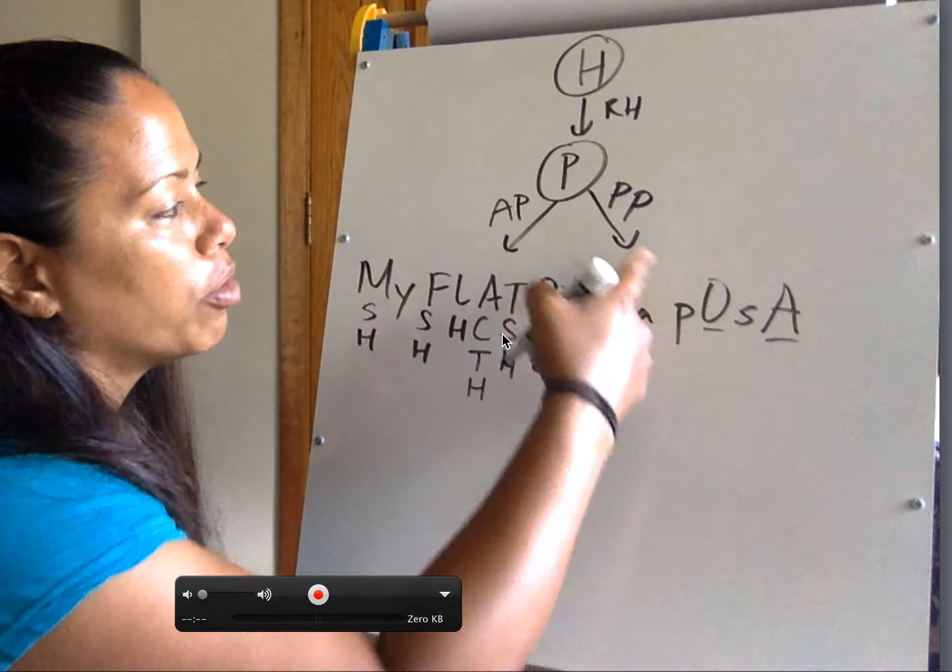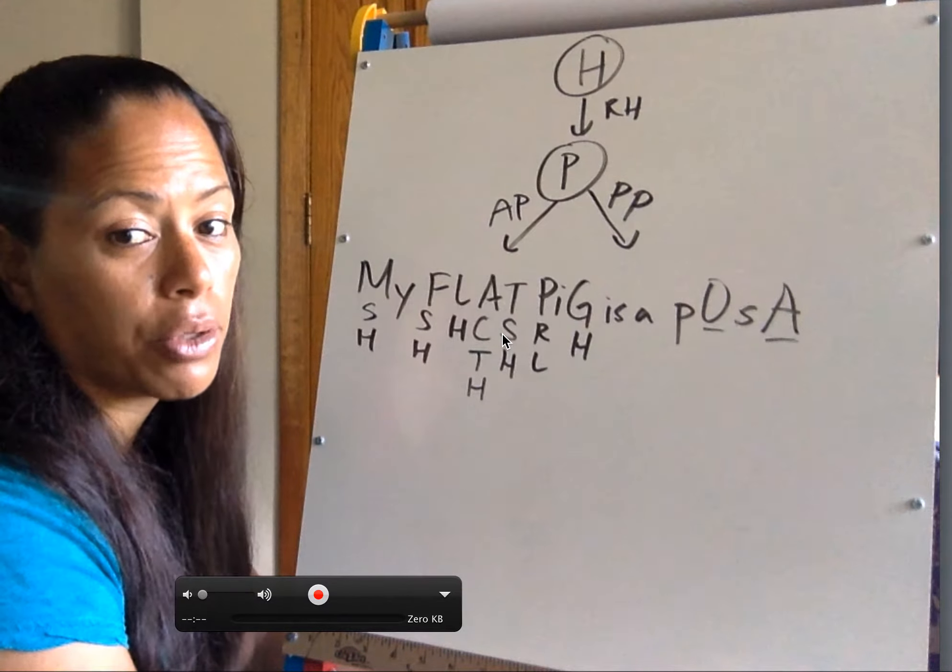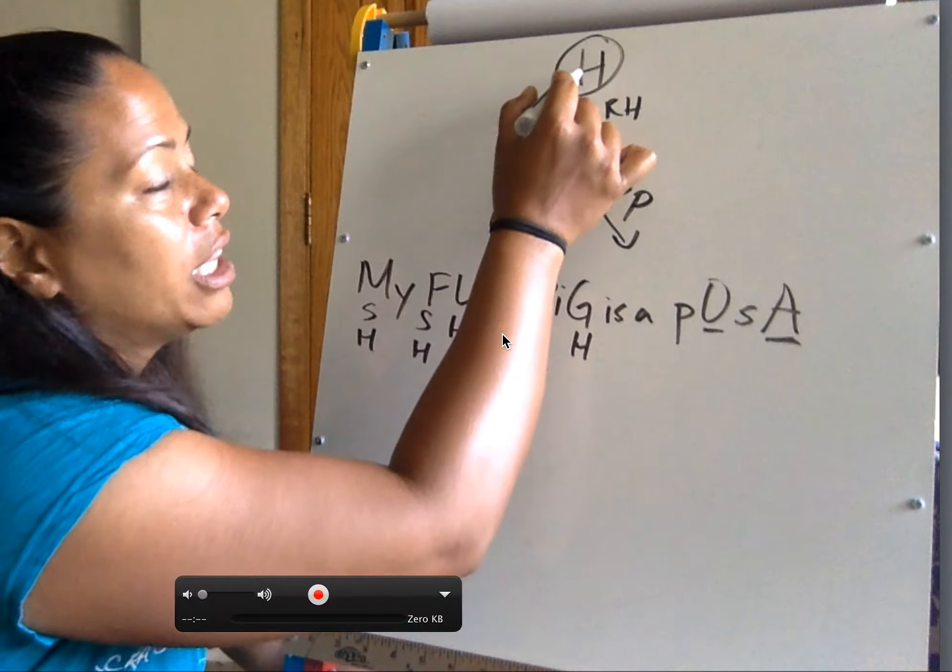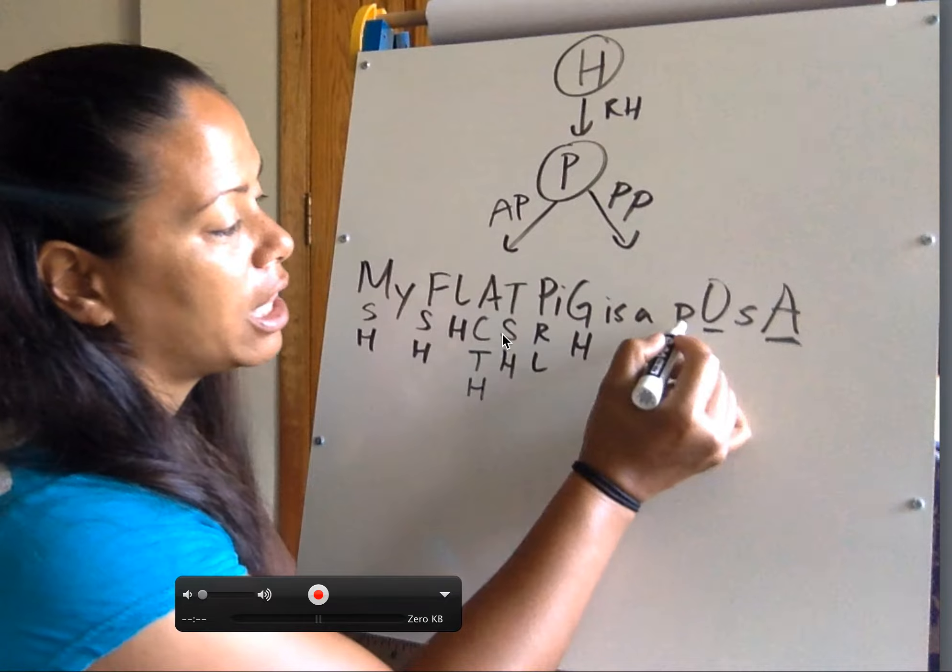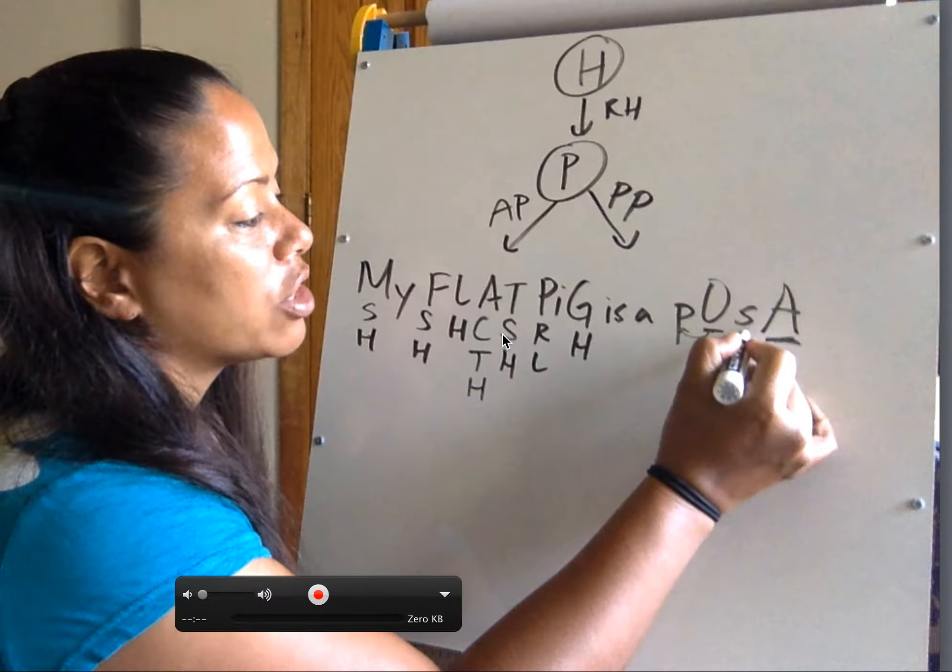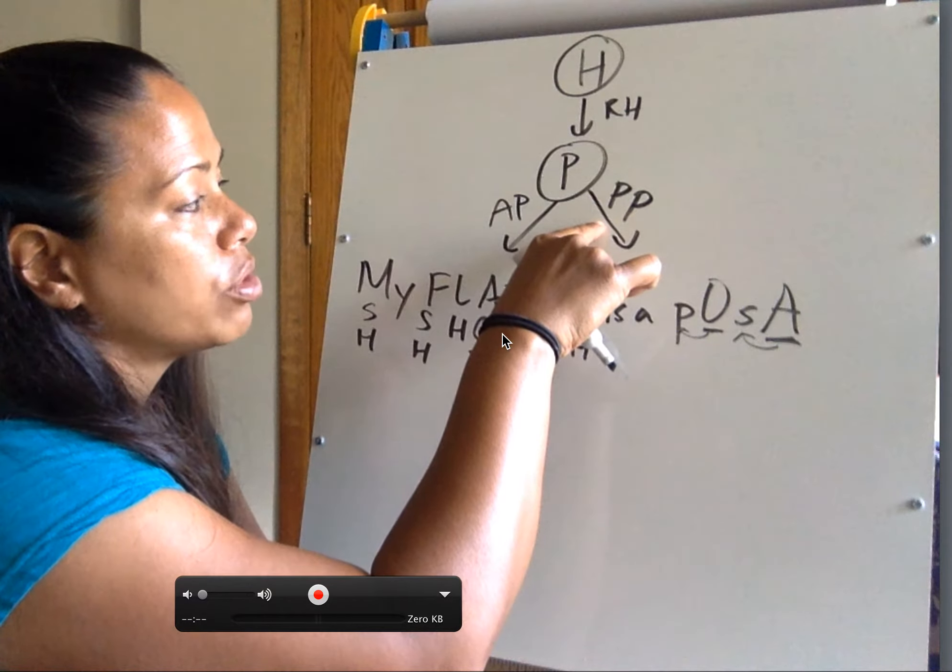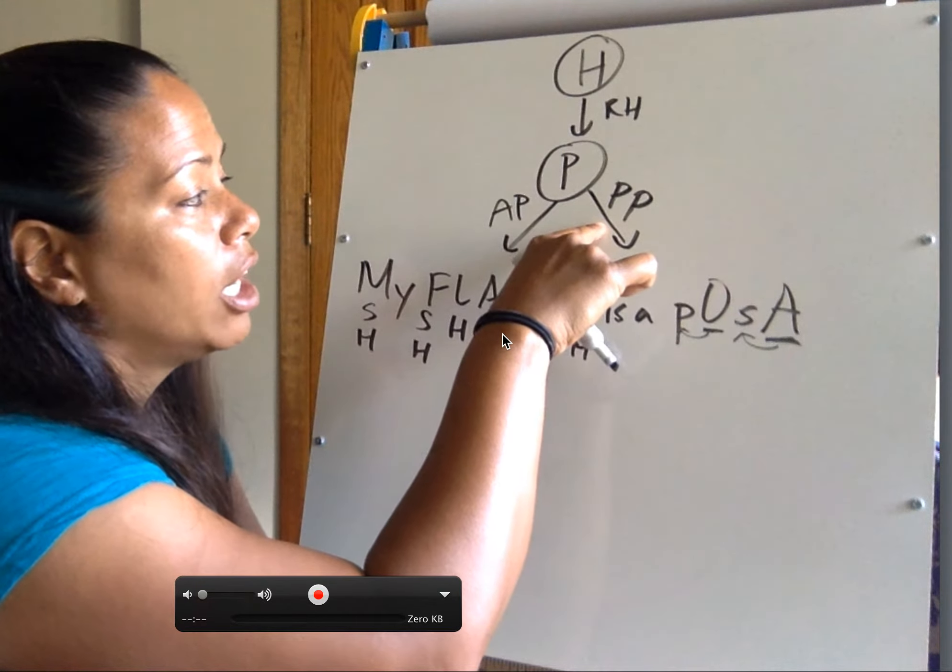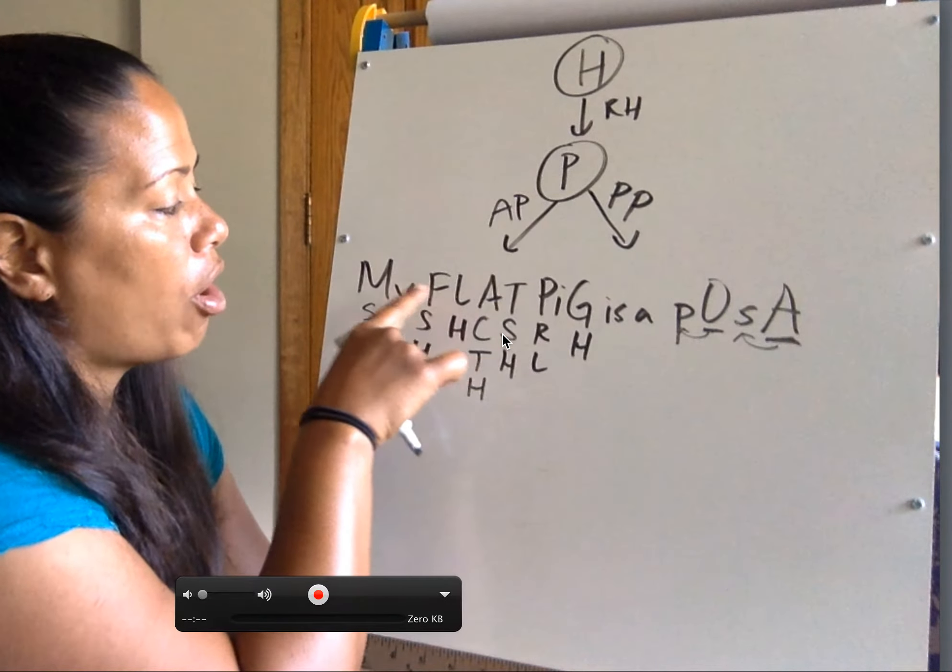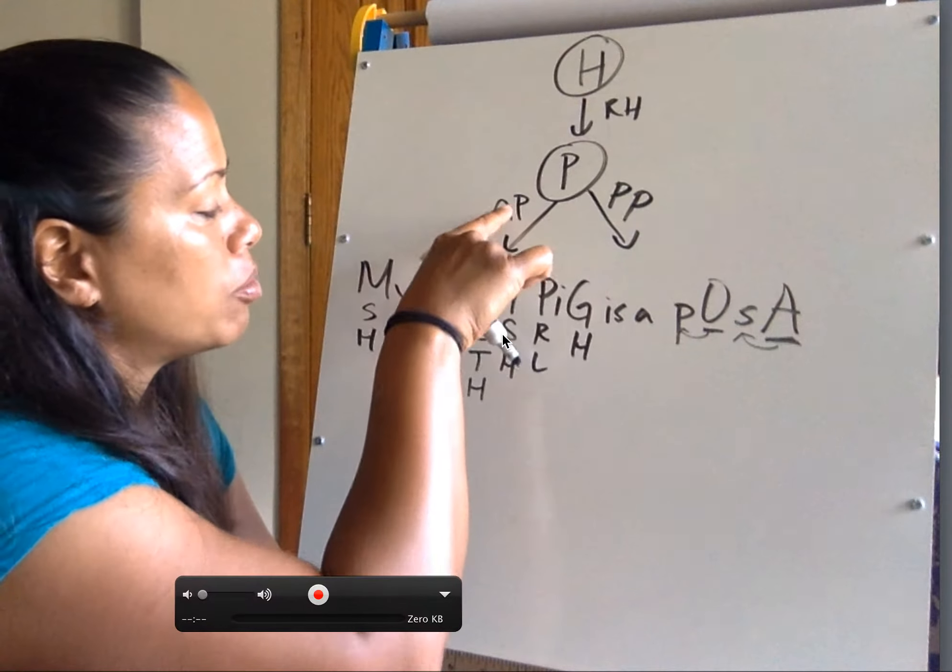And then the two hormones that are released from the posterior pituitary, not made by the posterior pituitary, oxytocin and ADH are actually made in the hypothalamus in the paraventricular nucleus and the supraoptic nucleus, but it's stored, it's sent down to the posterior pituitary where it's stored and released. My flat pig, these hormones here are made, stored, and released from the anterior pituitary.